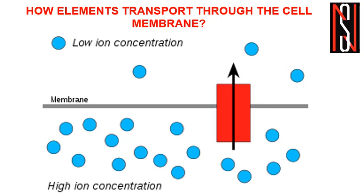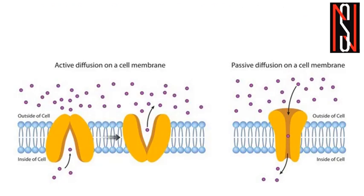Elements like iron, zinc, copper, and molybdenum come inside the cell against the concentration gradient, since their concentration increases by many thousand-fold inside the cell. It would be interesting to discuss how specific receptor proteins allow only selected elements to come inside the cell — this can be passive diffusion, and it can also be done through an ion-specific channel.